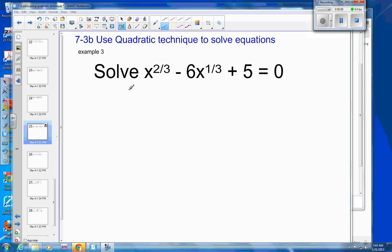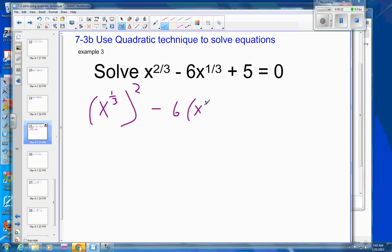And so this one, we need to break it up and make it into a quadratic form. So this will be x to the one-third, and we take that and we're going to square it. And then minus 6, and that's going to be x to the one-third, and then plus 5 equals 0.